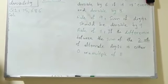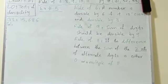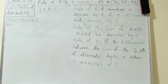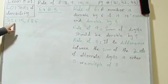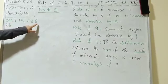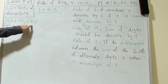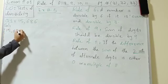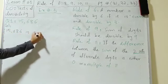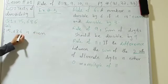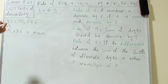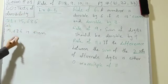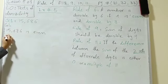Now let's start Exercise 5. The remaining rules to check are divisibility by 6, 9, and 11. For question number 1, the number is 15,686. Let's check its divisibility by 6 first. The number 15,686 is even because it has 6 in the units place. So the first condition for the rule of 6 is fulfilled. Now we check the second condition: divisibility by 3.